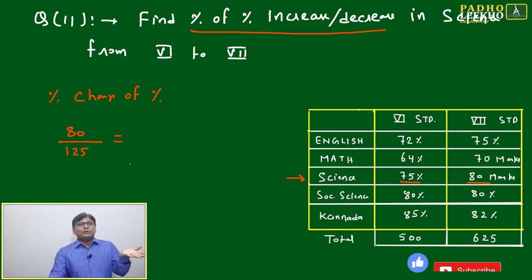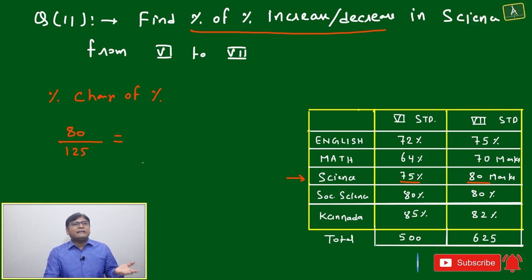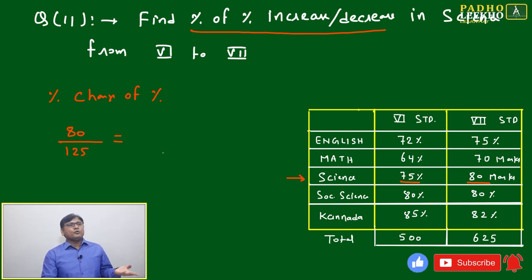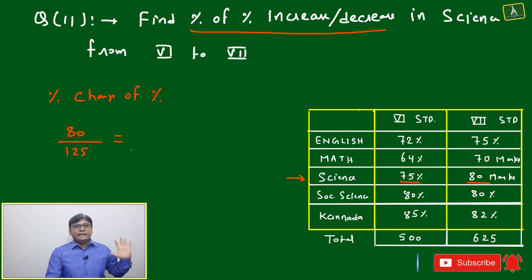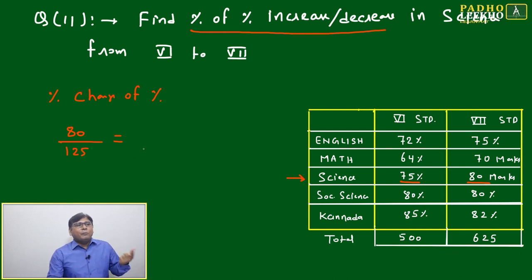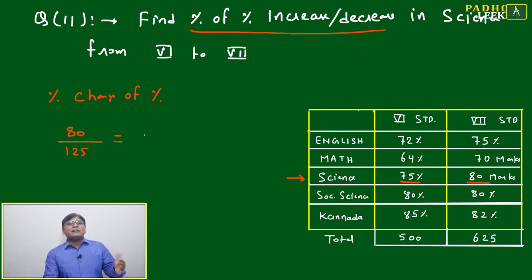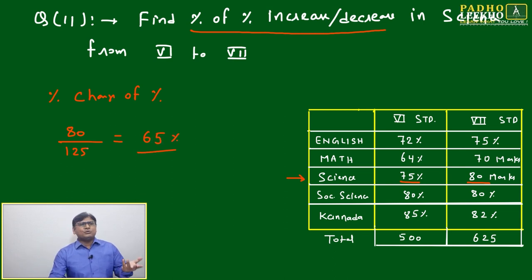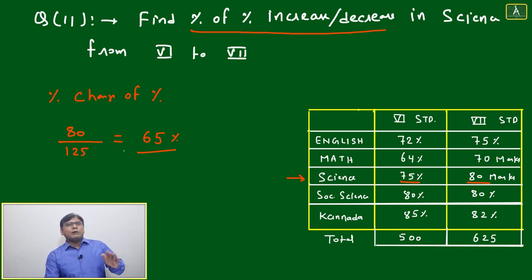The base is 125, not 100, so the percentage will not be 80 percent — it will be less than 80 percent. To find it, divide 80 by 125, which gives 65 percent. You can simply divide, or alternatively take one-fourth of the value — either way works.